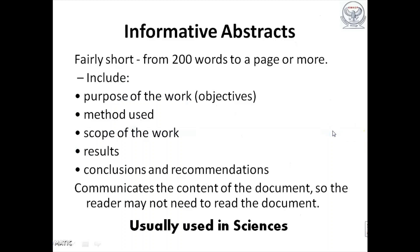An informative abstract is fairly short, ranging from 200 words to a page or so. The inclusions are the same: the objectives, methods used, scope of work, and it will also include results, conclusions, and recommendations if any. This kind of abstract communicates the content of the document so that the reader does not have to read the entire article. This is the type usually used in sciences.